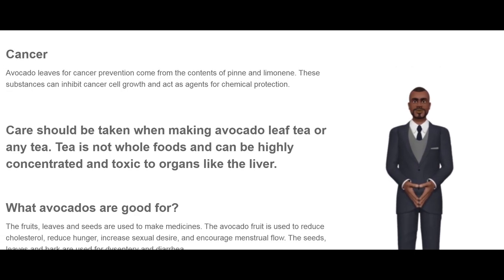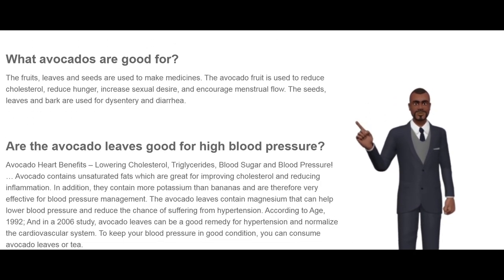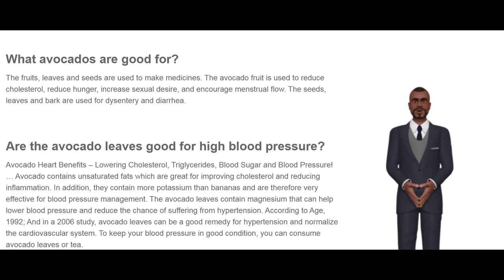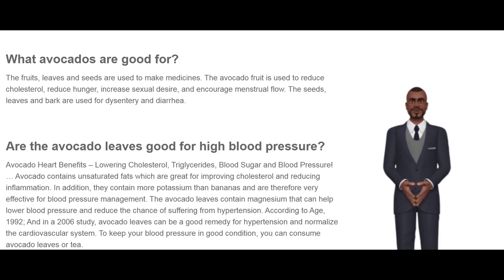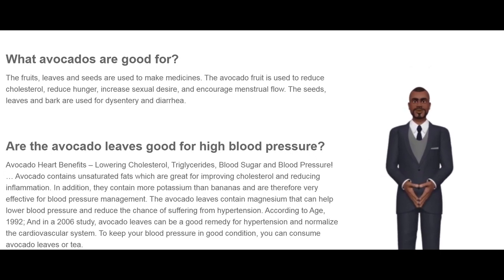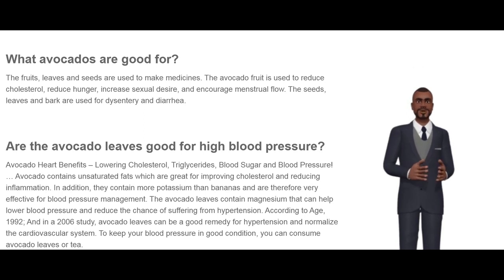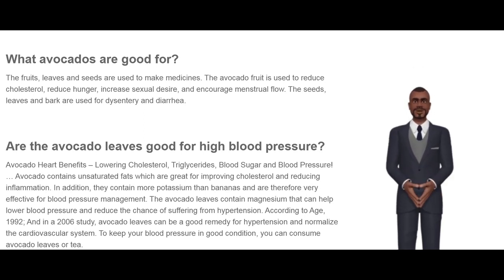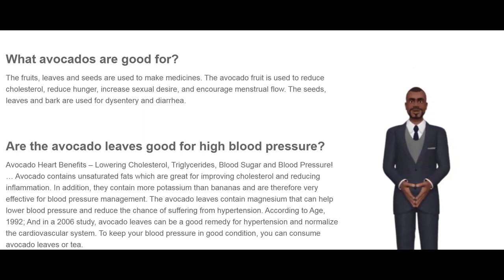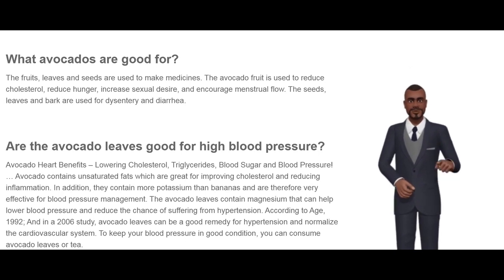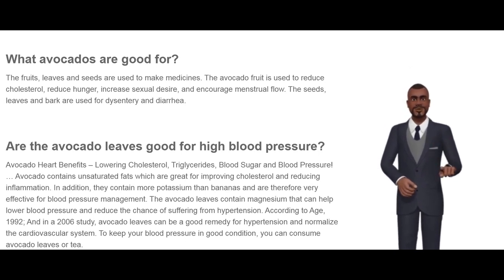What are avocados good for? The fruits, leaves, and seeds are used to make medicines. The avocado fruit is used to reduce cholesterol, reduce hunger, increase sexual desire, and encourage menstrual flow. The seeds, leaves, and bark are used for dysentery and diarrhea.